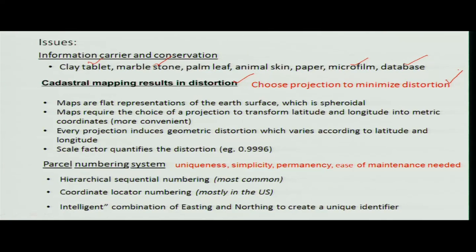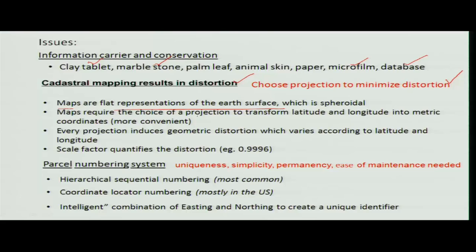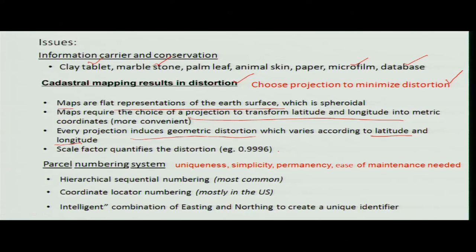Maps are representations of the earth's surface. As you move from the equator towards the poles there is a warping effect due to the spheroidal shape of the earth, while projections use latitude and longitude coordinates. Every projection induces geometric distortions of latitude and longitude, and there is further scale distortion due to the scales used in mapping.